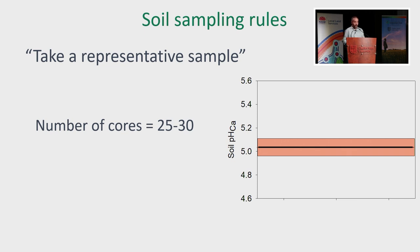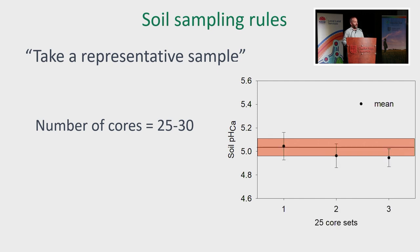Number of cores. Sampling's hard sometimes, but you've got to do it well. Cutting the number of cores that you take hurts you. When I teach this, I say between 25 and 30 cores is what you should take. When you take 25 cores and do that three times with those data points — so of those 50 sites, if you randomly selected 25 cores — each one of those black dots is the mean of 25 cores, and then you have a standard error around those 25 cores.